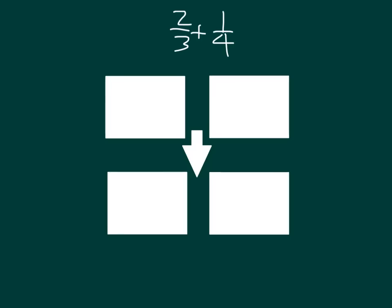Let's go ahead and look at 2 thirds plus 1 fourth. Here, we'll go ahead and model 2 thirds by dividing vertically. We have to draw 2 lines to divide this into thirds, and then we're looking at 2 of those parts. In our other rectangle, we'll go ahead and model 1 fourth by dividing it horizontally. We have to draw 3 lines to divide it into 4 parts, and then we're only looking at 1 of those parts.